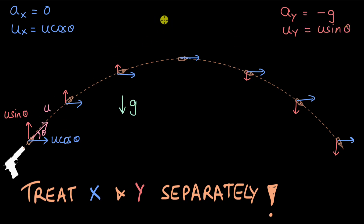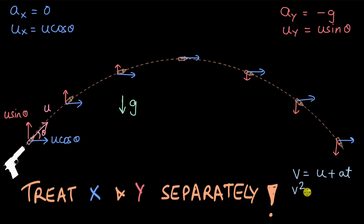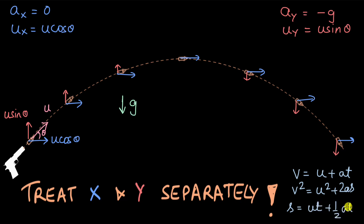Now let's write the kinematic equations so we can refer to them. We have: v equals u plus at; v squared equals u squared plus 2as; and s equals ut plus half at squared.